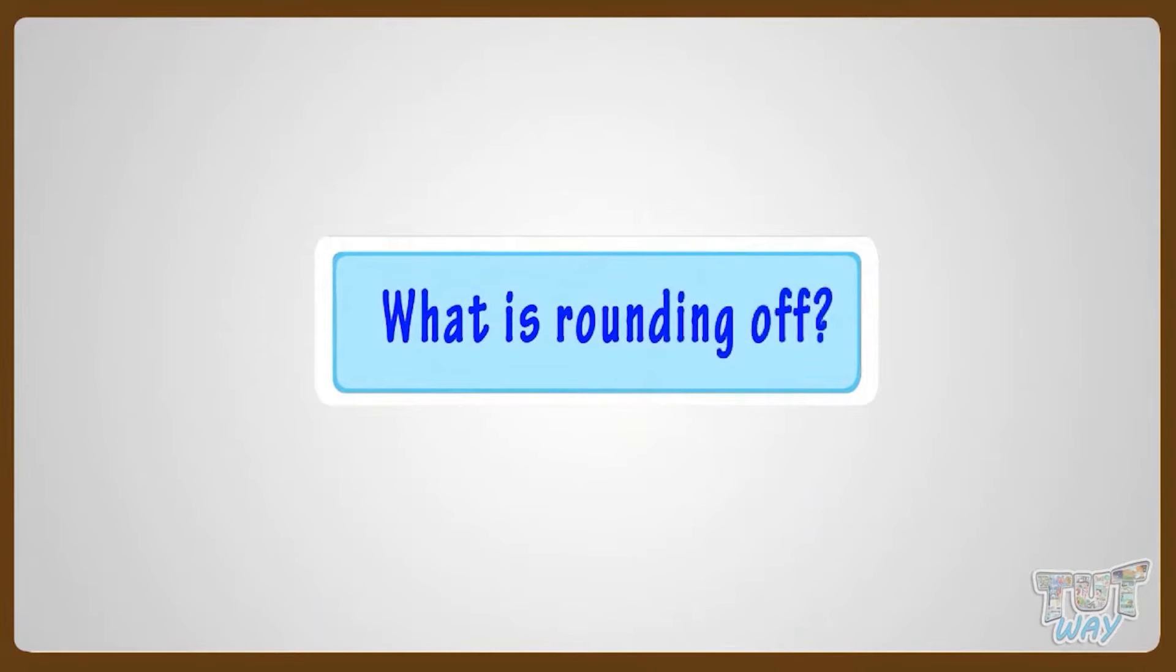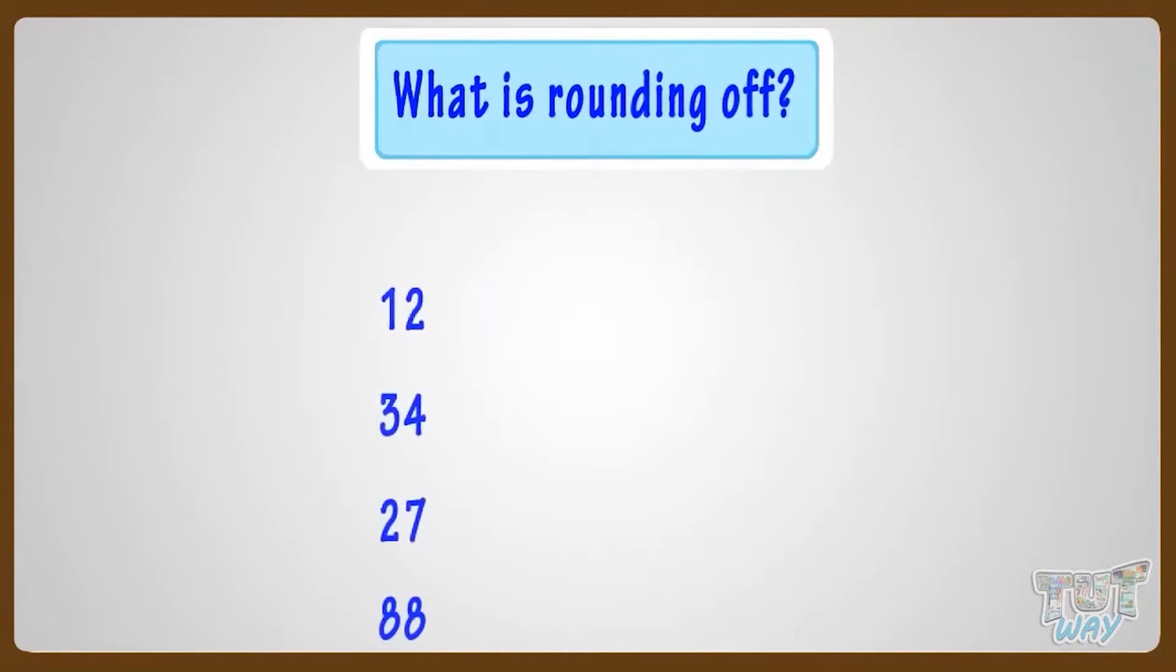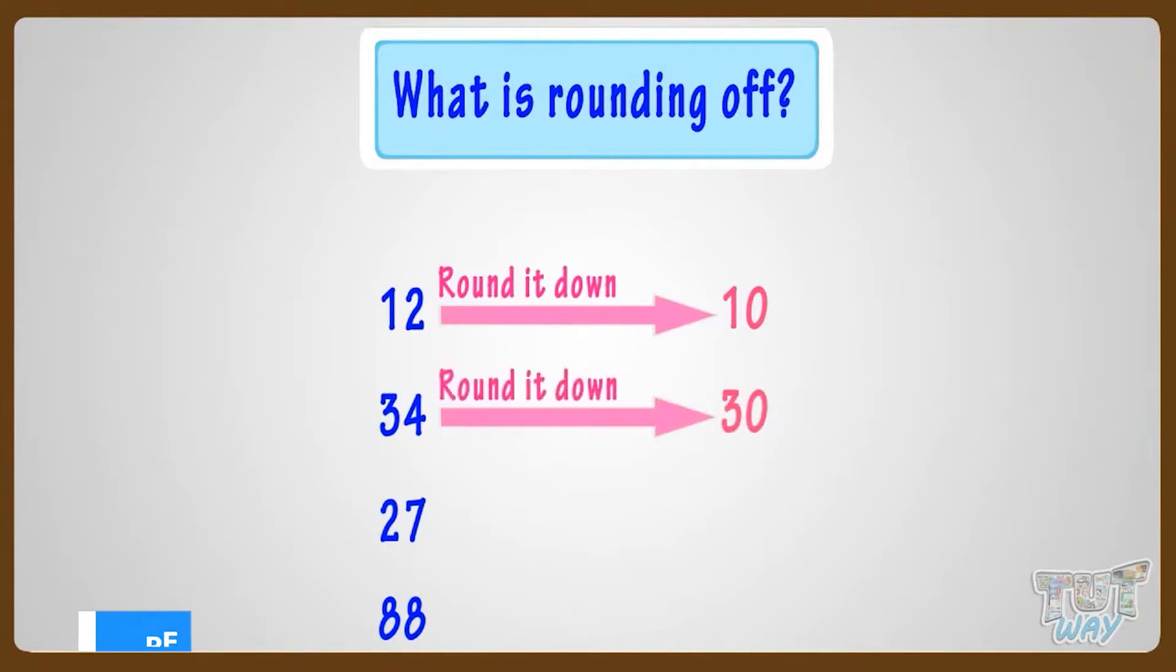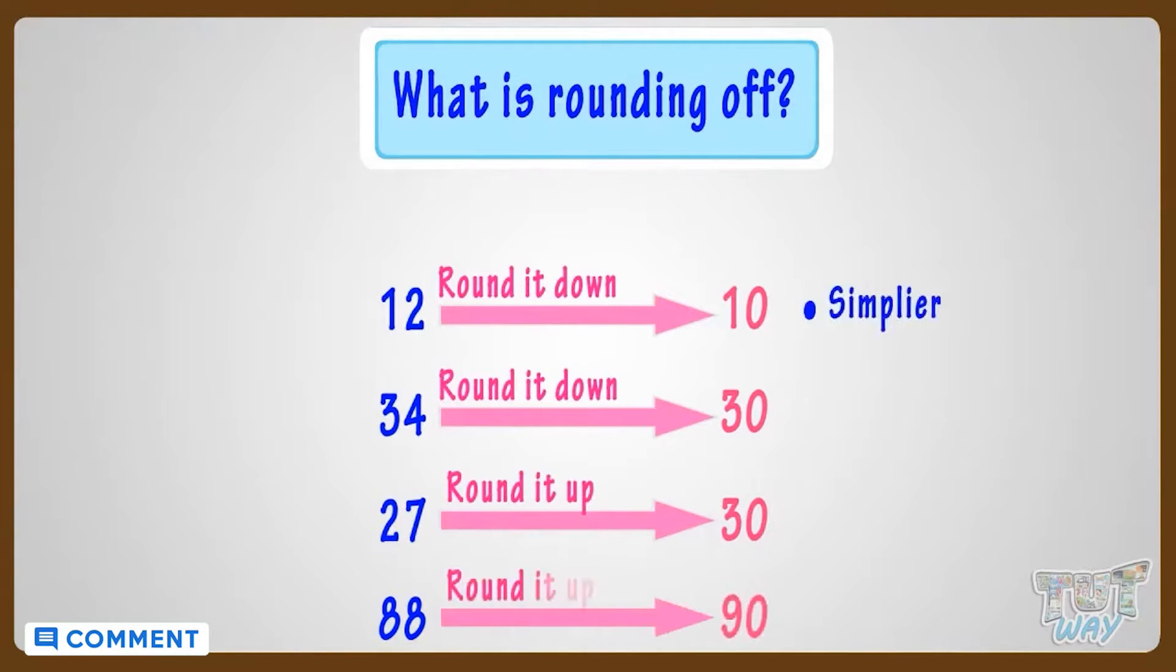First of all, what is rounding off? Rounding is to replace the number with another one that has value approximately equal to our original number but is simpler, shorter,